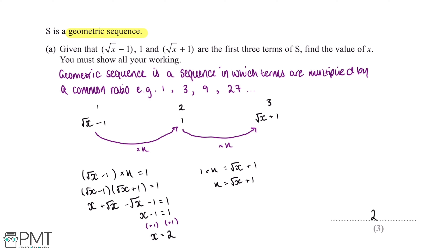And x = 2 is our final answer. This question is worth three marks. We get our first mark for forming an equation from the sequence, our second mark for substituting √(x+1) in place of k, and our third mark for the correct answer.